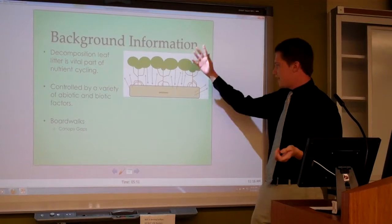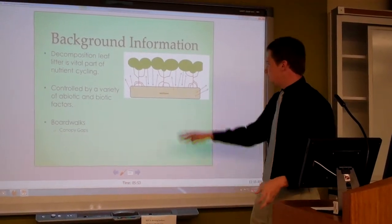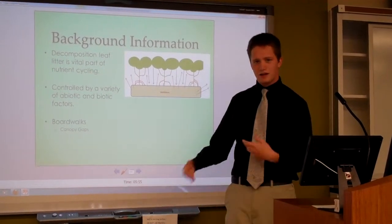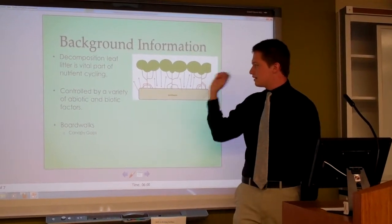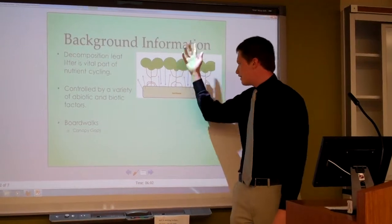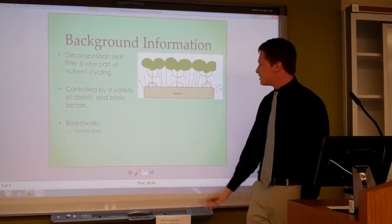So here is a healthy mangrove system. The blue arrows represent leaves that are coming into the detritus community here. And the red arrows represent the nutrients going back into the mangroves and also out to the other systems.